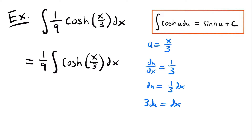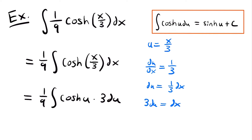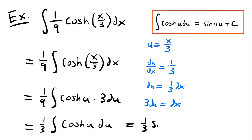We can rewrite this integral in terms of u: it is equal to one ninth times the integral of hyperbolic cosine of u times 3 du. We replaced x divided by 3 with u, and replaced dx with 3 du. Pulling the 3 to the outside gives us 3 times one ninth, which reduces to one third. So this becomes one third times the integral of hyperbolic cosine of u, du.